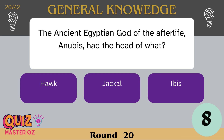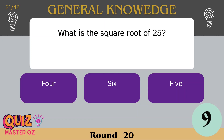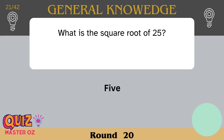The ancient Egyptian god of the afterlife, Anubis, had the head of what? A jackal. What is the square root of 25? Five.